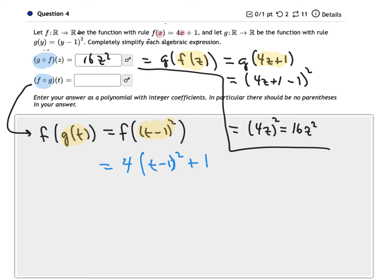Now in this case, the instructions tell us that they want us to simplify the final answer. So it says there should be no parentheses in our answer. So we can simplify this by multiplying out t minus 1 squared over on the side. So remember, t minus 1 squared means t minus 1 times t minus 1. And so if you do that, you'll have 4t squared minus 8t, and then plus 5 in the simplified answer. So that'll be the expression that goes in there.